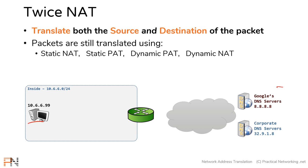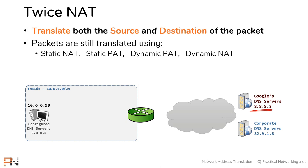Here is a topology with an internal host and then a couple of external hosts — specifically, they are DNS servers. One of them is owned by the corporation you work for, and the other one is a public DNS server that anybody can use. Let's say our host is configured currently to use Google's DNS server, but you have some sort of policy in place at your corporation that says users must use your corporate DNS server.